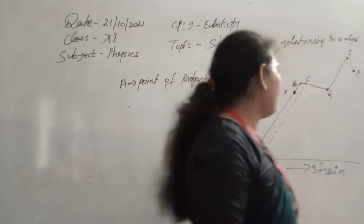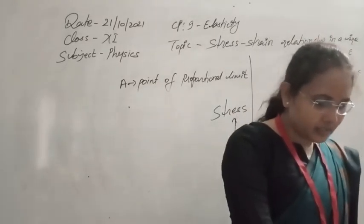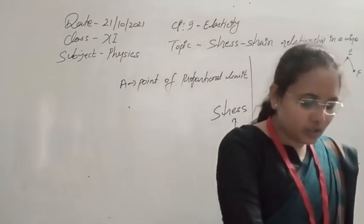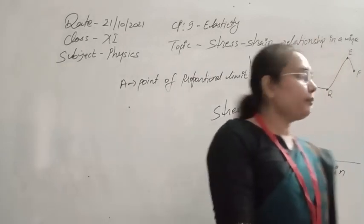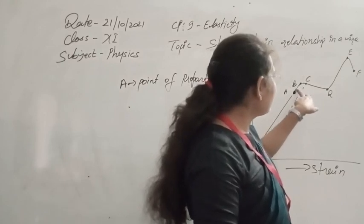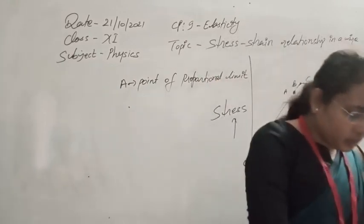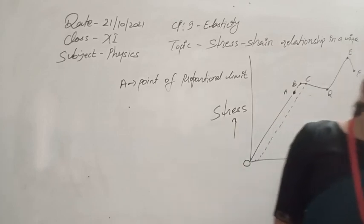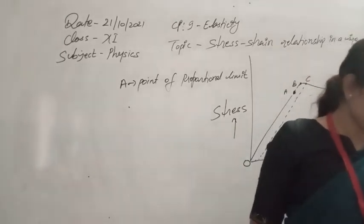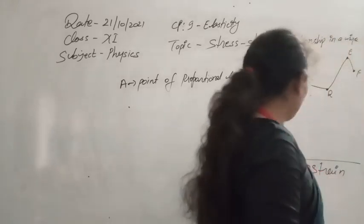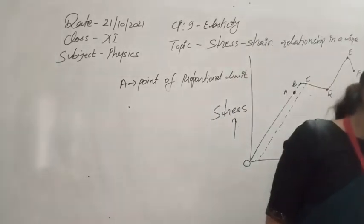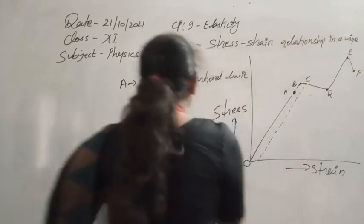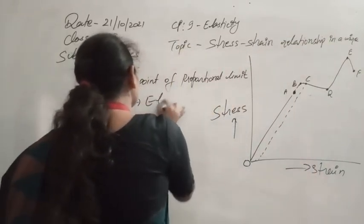Beyond point A, from A to B, the stress-strain variation is no longer a straight line — it starts to be slightly curved. However, if the wire is unloaded at point B, the graph follows the reverse path B-A-O, meaning the wire still regains its original shape and size. Point B is known as the elastic limit.